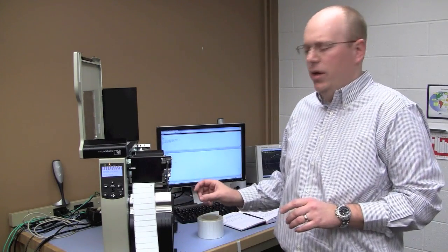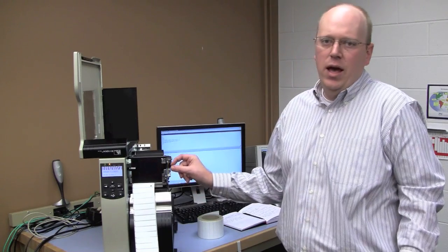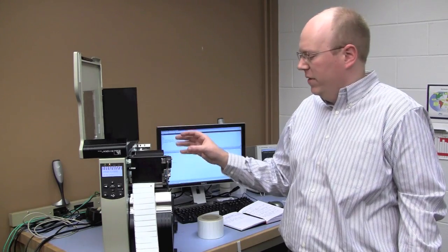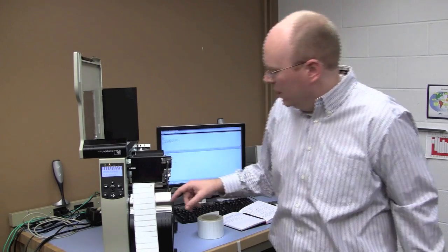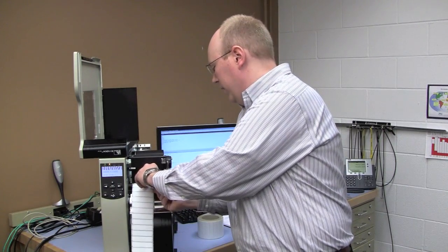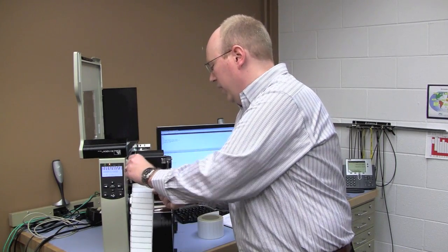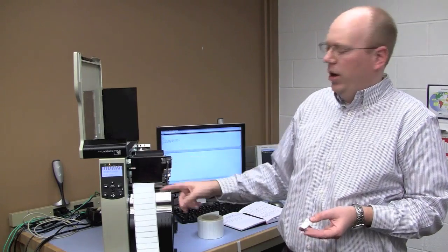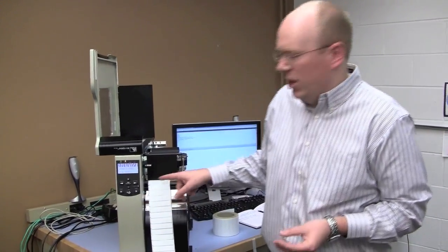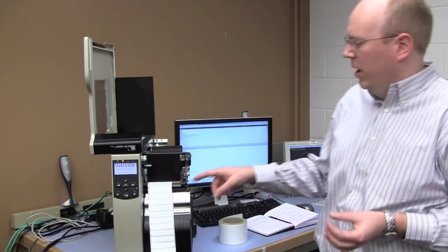It's important to realize that's different than just the label length calibrate. The RFID calibrate procedure actually sets parameters like RFID encode power and the RFID element settings that are required to encode this from our adaptive array technology. So what I need to do is remove one label so the printer doesn't get confused and accidentally encode on a forward tag. I want it to calibrate on the tag underneath the print head. And then I initiate the RFID calibrate procedure from the front panel of the printer.